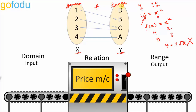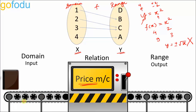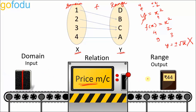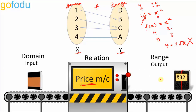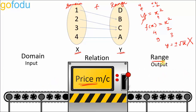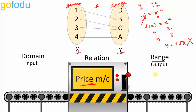All the values that y gives out constitute the range of the function. For example, consider an unusual function: a price machine that prints prices on different diaries. All the diaries entering the machine are the domain, and all the price tags coming out — values like 35, 45 — constitute the range of this function.